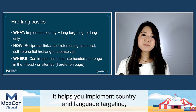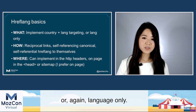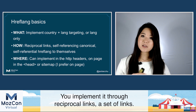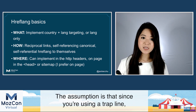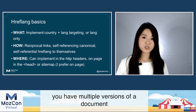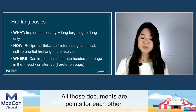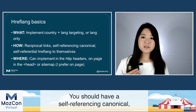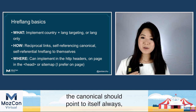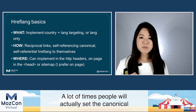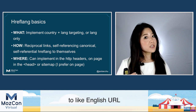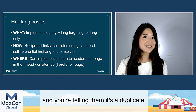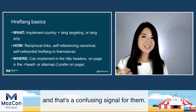Hreflang helps you implement country and language targeting — or language only. The only thing you must have is language. You implement it through reciprocal links — a set of links. The assumption is that since you're using hreflang, you have multiple versions of a document in different languages. All those documents should point to each other; that's called reciprocity. You should also have a self-referencing canonical — the canonical should always point to itself as an SEO best practice. A lot of times people will set the canonical to the English URL, but that's wrong — Google won't see the rest of your content because you're telling them it's a duplicate, which is a confusing signal.